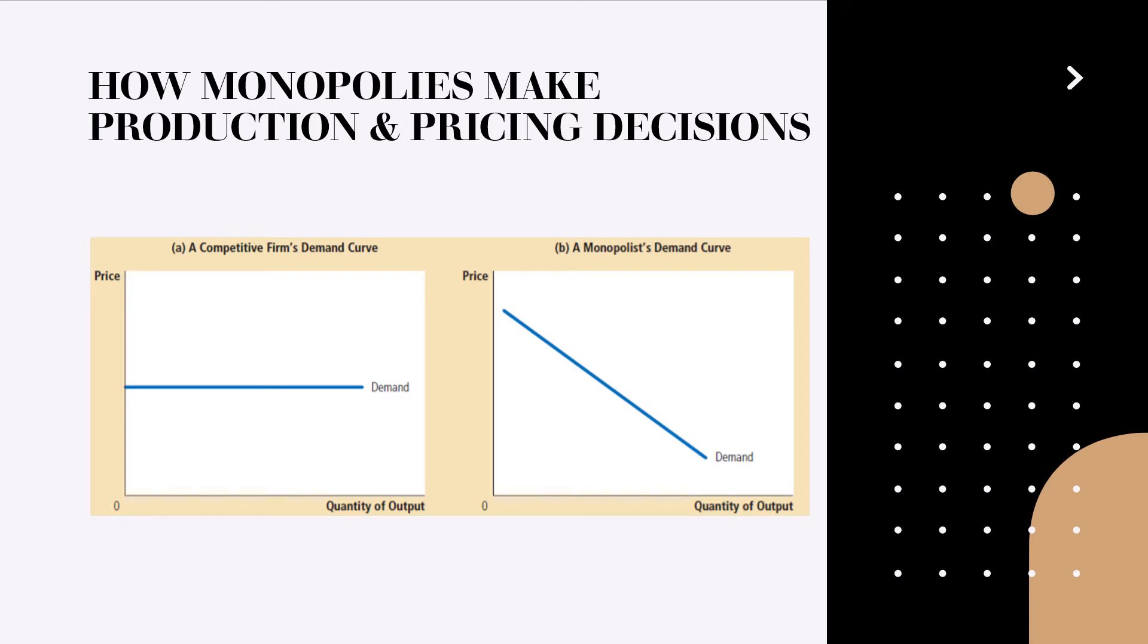Because the competitive firms are price takers, they in effect face horizontal demand curves as in panel A. However as a monopoly firm is a sole producer in its market, it faces the downward sloping market demand curve as shown in the second graph.